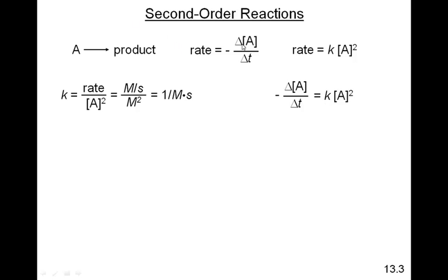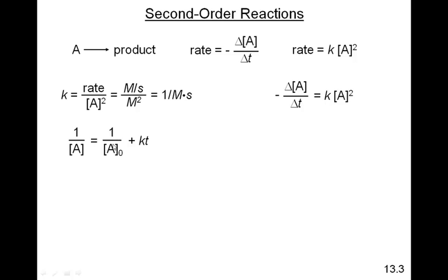Because we see that rate is equal to minus delta A over delta T, and that rate is equal to K times A squared, we can set these two equal to each other. We do a little mathematics on it, and we would find that this equation, if we were to plot it, would not come out to be a nice linear equation. So we do a little bit more mathematics on that equation, and we come up with this equation right here. This equation is a linear equation. There's your Y, which is 1 over A — A being the concentration at some time T. That's equal to your Y-intercept, which is 1 over A₀, where A₀ is the concentration when time is equal to 0 — the initial concentration — plus KT, so K represents the slope of the line, and T is the X value.